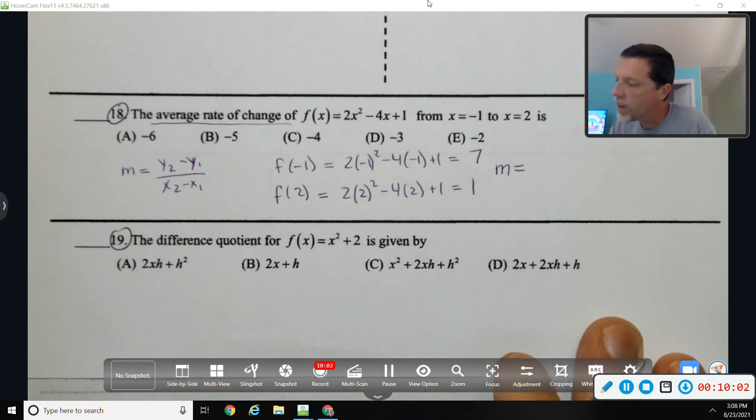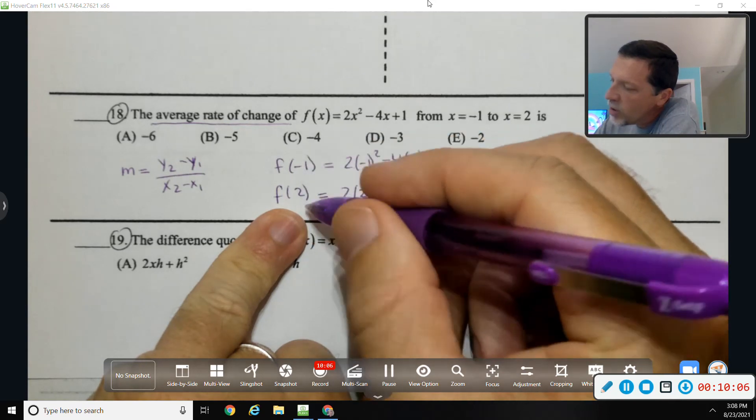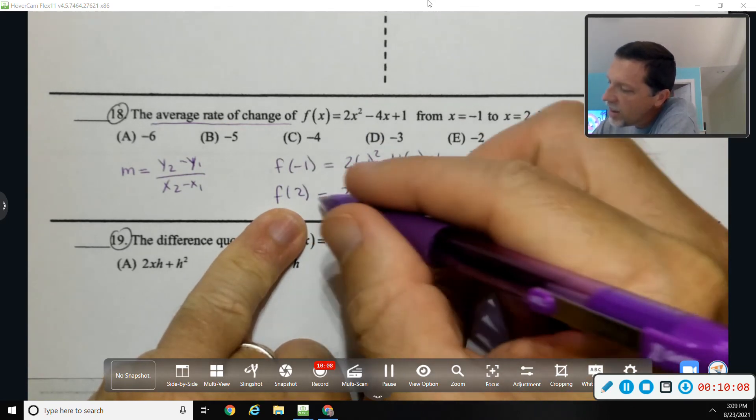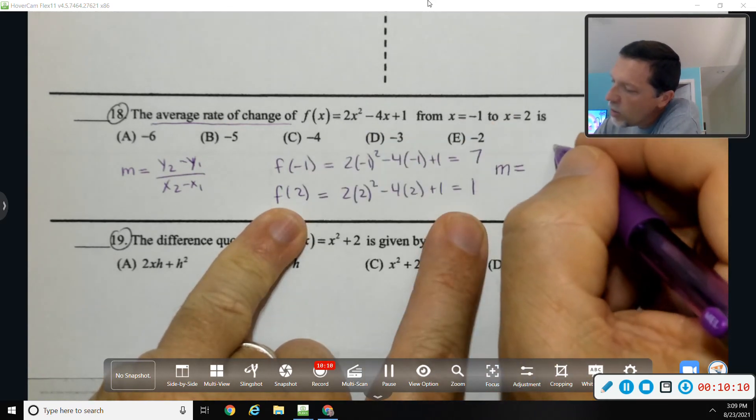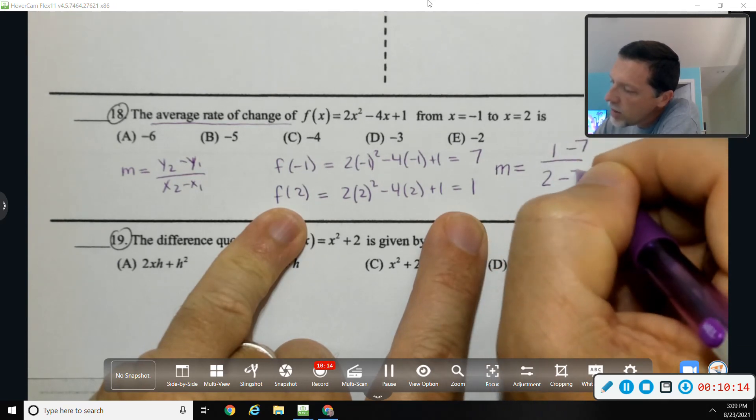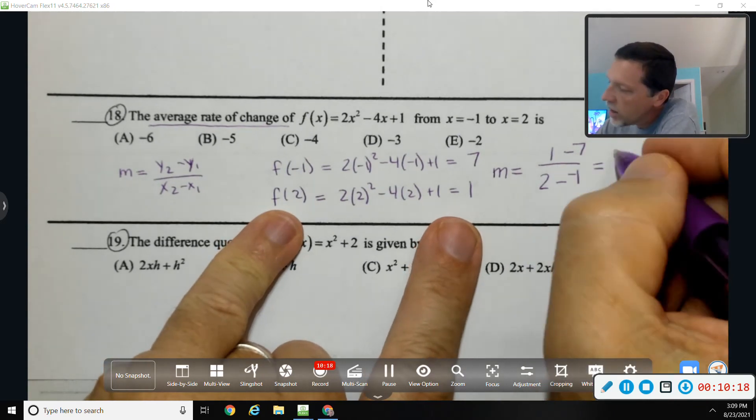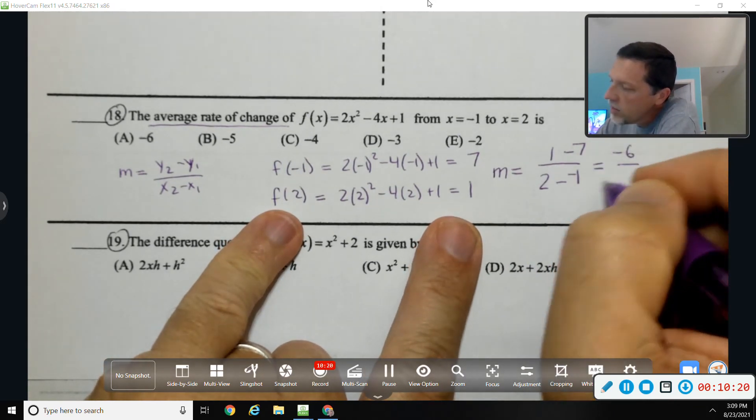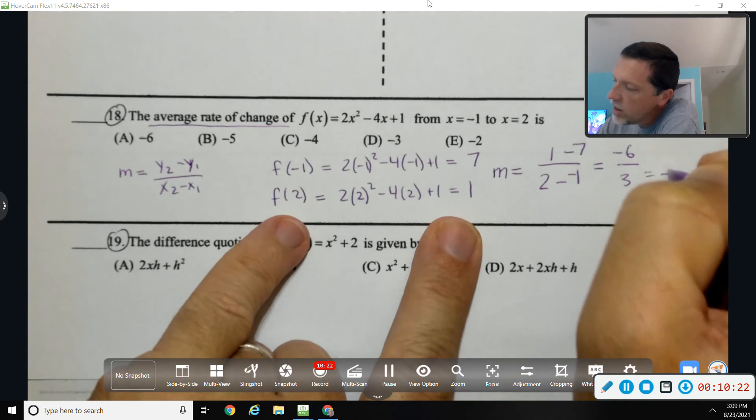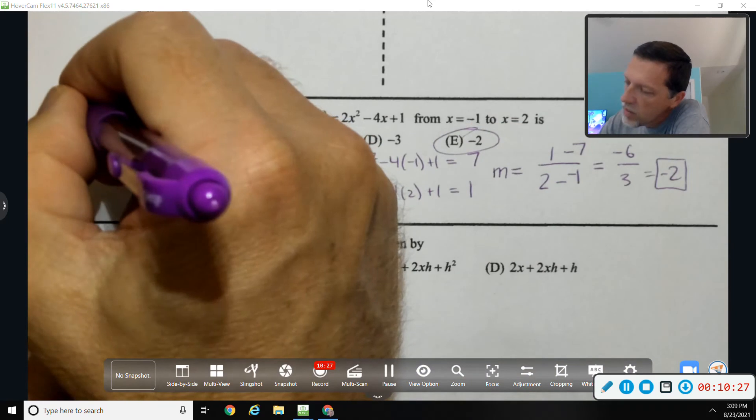Since this one was two and one, I'm going to use that as my two and my one. So y2 minus y1 over x2 minus x1. Negative signs in there, but that's okay. Negative six over three would be negative two, and one of my answer choices is negative two.